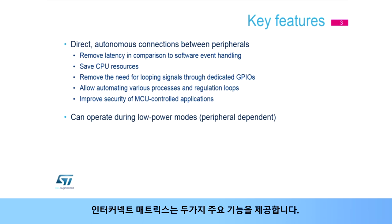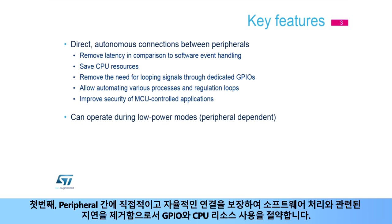The Interconnect Matrix offers two features. First, it ensures direct and autonomous connections between peripherals, allowing removal of latency in regards to software handling, thus saving GPIO and CPU resources.